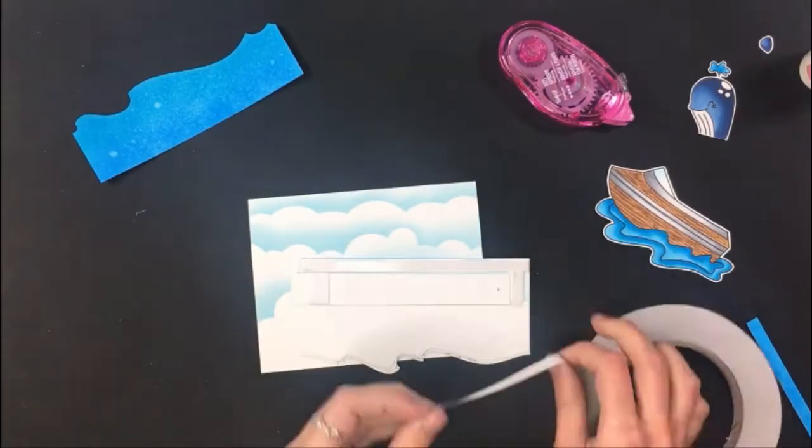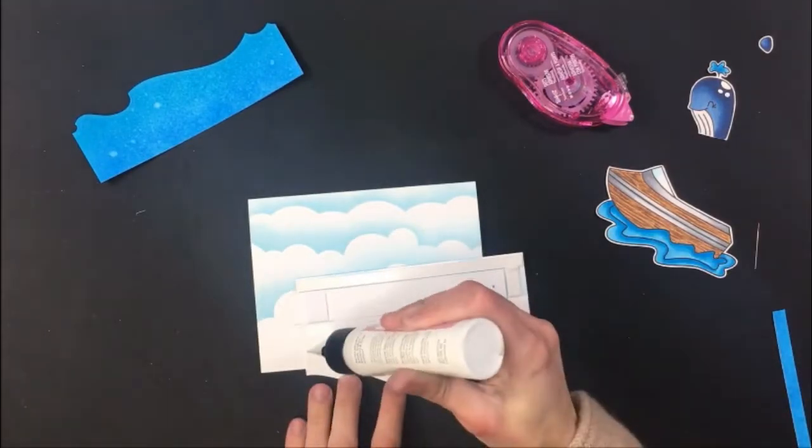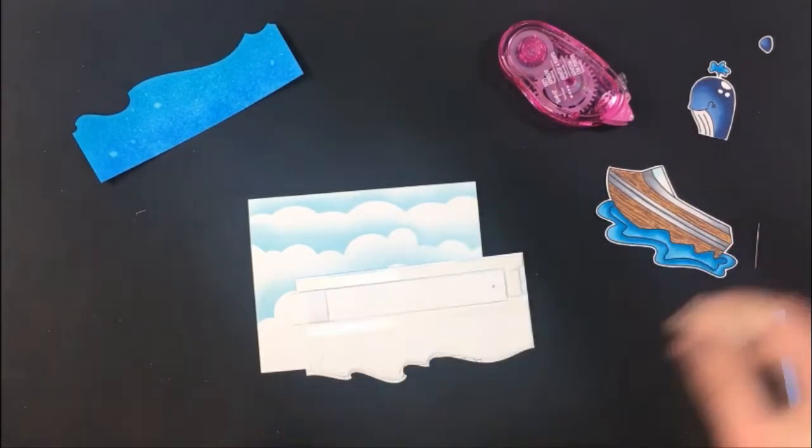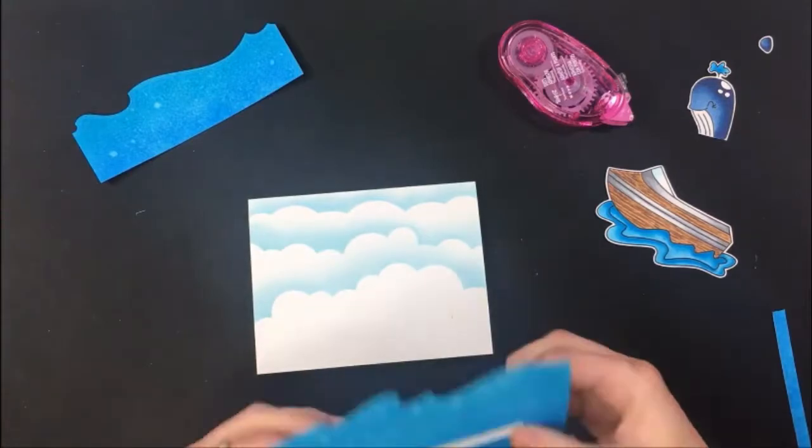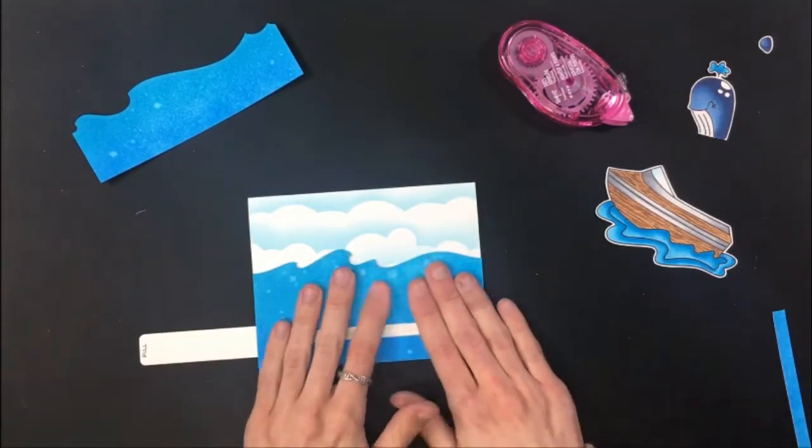So sorry about that. I'm just using some double-sided tape to adhere this down to the card base. I use tape around where the mechanism is and then glue towards the top just because I didn't want any glue to squirt out and affect that mechanism at all. As you can see it's working well there so we're going to move on.